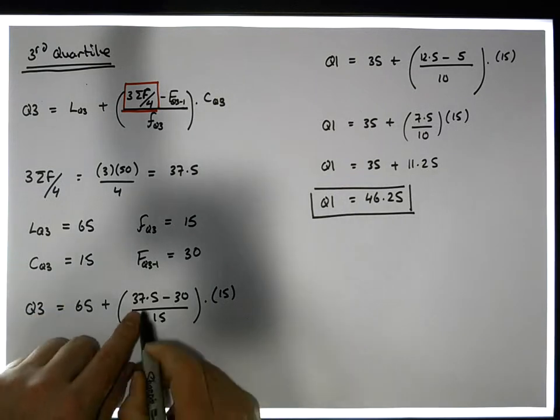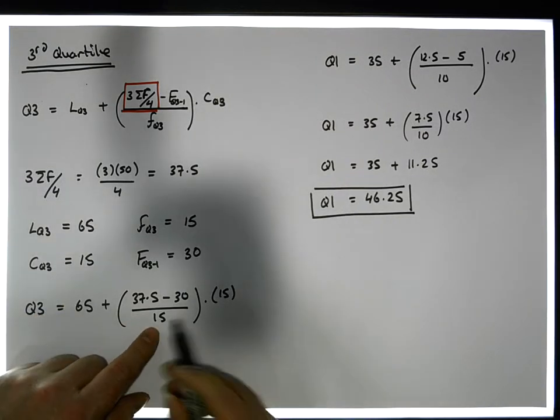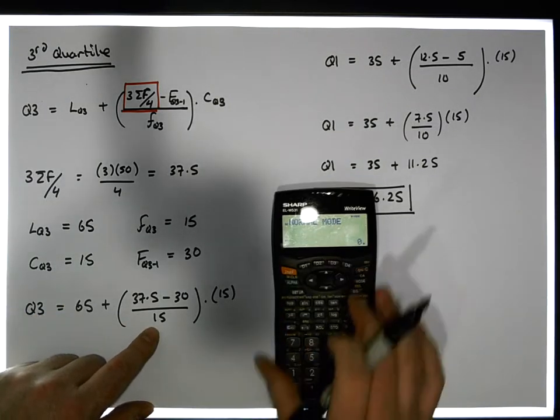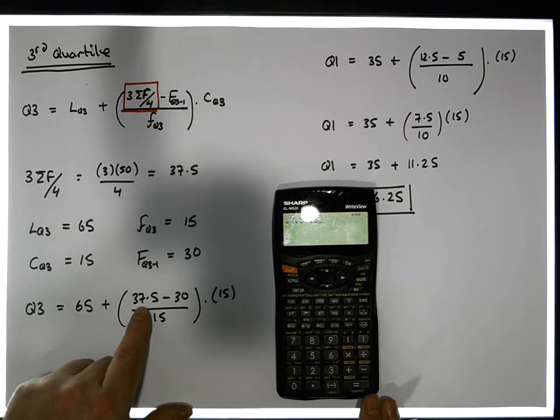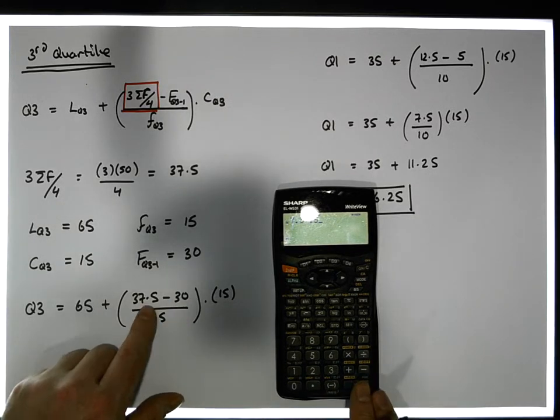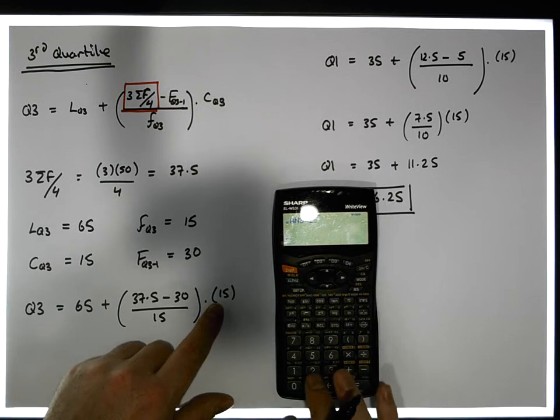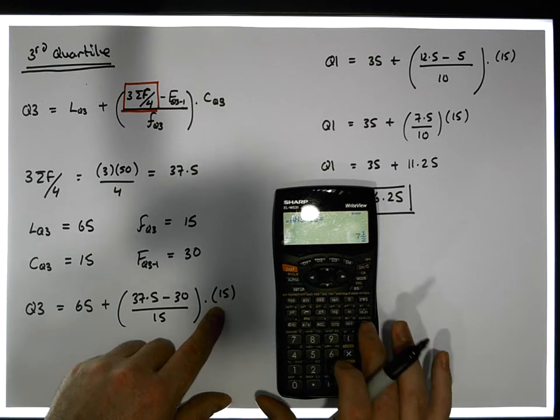So it's 7.5 of the 15s. So that's going to be 7.5 divided by 15, because 37.5 minus 30 is 7.5, divided by 15 gives us a half.